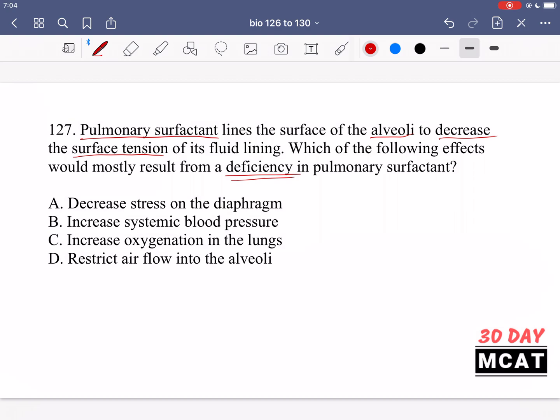Option A is saying that the effect of a deficiency in the surfactant would lead to decreased stress on the diaphragm. That's incorrect. If anything we would probably have increased stress because we need to breathe even harder to get more oxygen in. B, increased systemic blood pressure? That's incorrect. There isn't really a direct relationship between the alveoli and its functions changing and how that's going to affect blood pressure in the circulatory system. That's more so if something happened in the heart. C, increased oxygenation in the lungs? If anything it would actually decrease it, not increase it, so that isn't correct. D is correct. It would restrict airflow into the alveoli because they can't really expand properly.